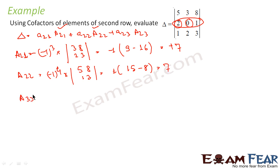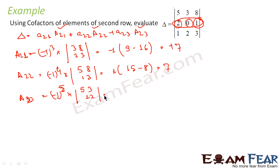Similarly A23: ignore this row and this column; you are left with 5, 3, 1, 2. This is (-1)^(2+3) into M23, so it is minus of (5 into 2 = 10) minus (3 into 1 = 3), which is minus 7.